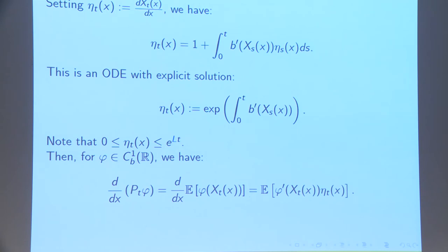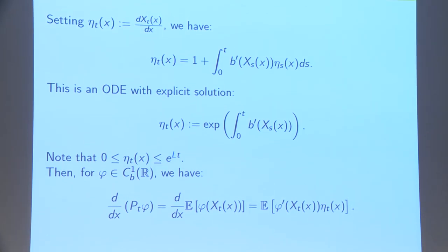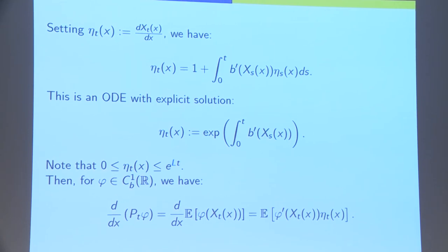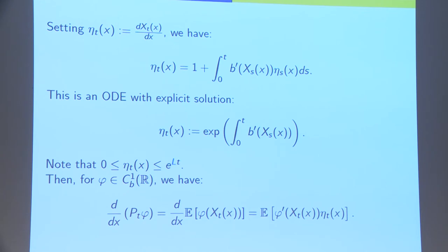The idea of the Bismut-Elworthy-Li formula is to look at the dependence of the solution of the SDE with respect to the initial condition. Consider the derivative of the solution with respect to the initial condition, that I'll call η. By differentiating the SDE with respect to X, it is not difficult to see that η_T solves the variational equation given by this differential equation. This is an ODE with an explicit solution, η_T.